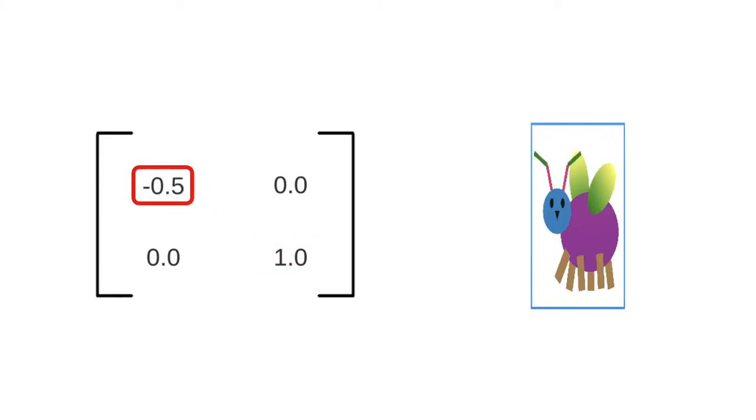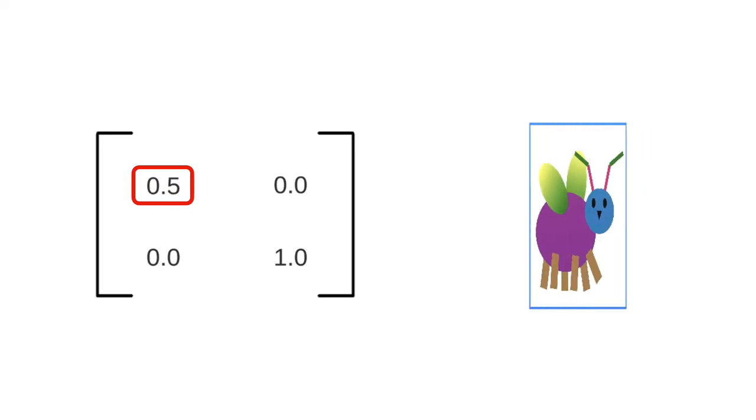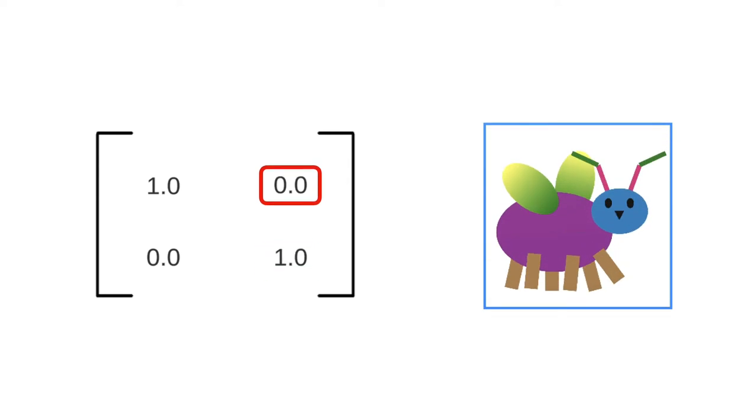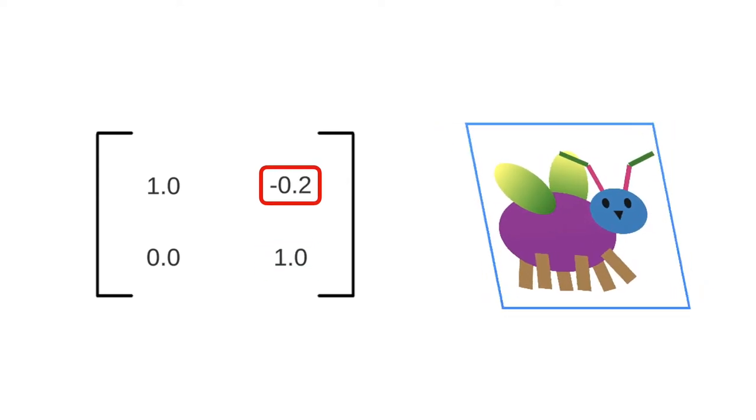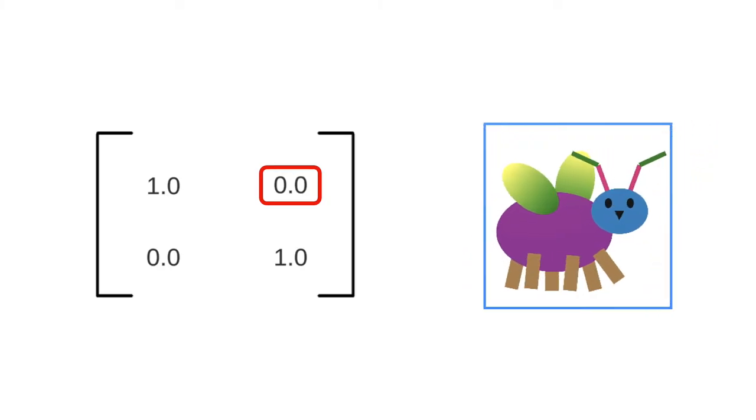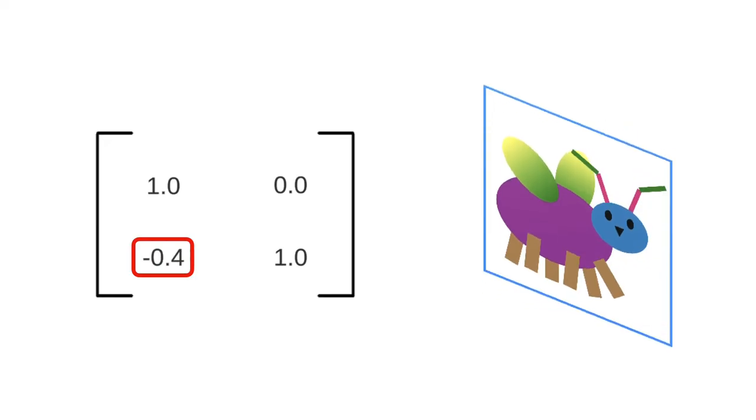When we make either element negative, it produces a reflection. The upper right entry corresponds to a horizontal shear, and the lower left is a vertical shear.